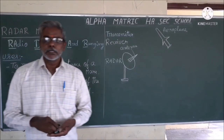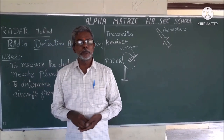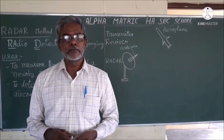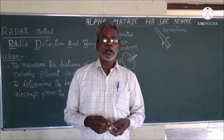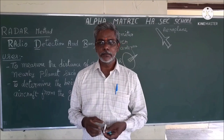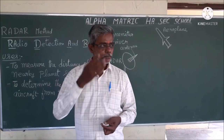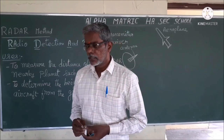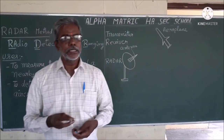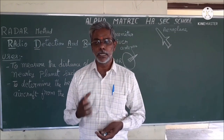Good morning students. Last class we discussed about the triangulation method and parallax method. In the triangulation method, we studied how to find the height of a tree, a black hole, or a tower. In the parallax method, we studied how to find the distance of the moon from the earth.